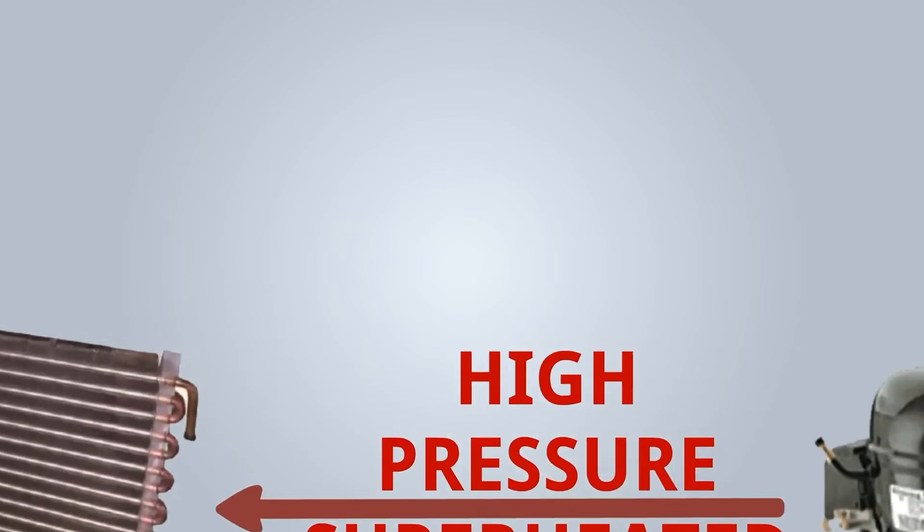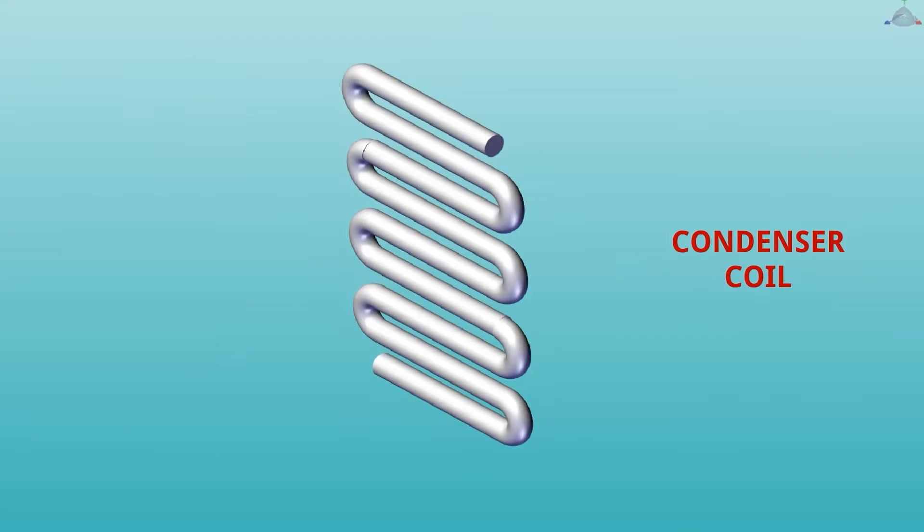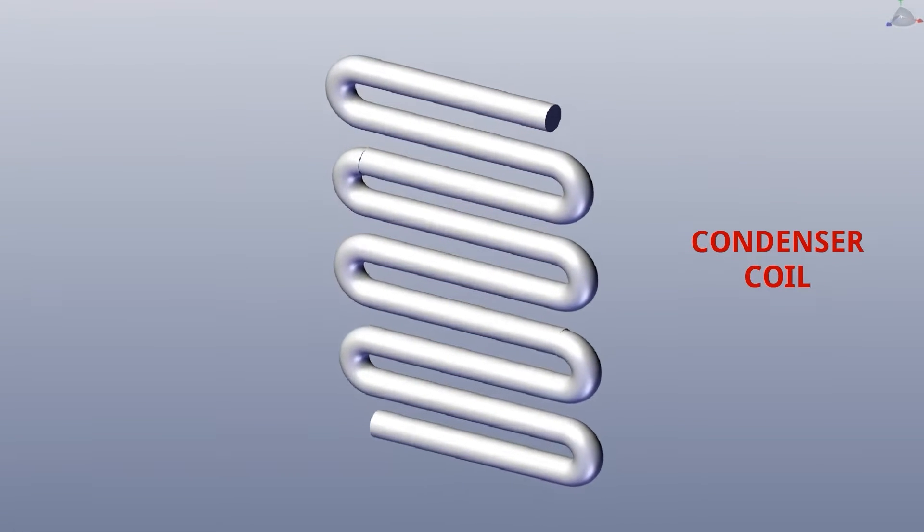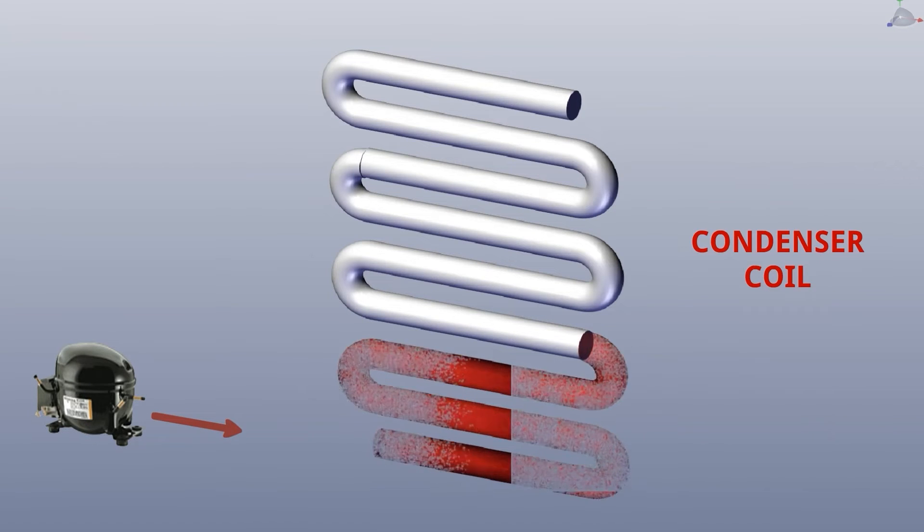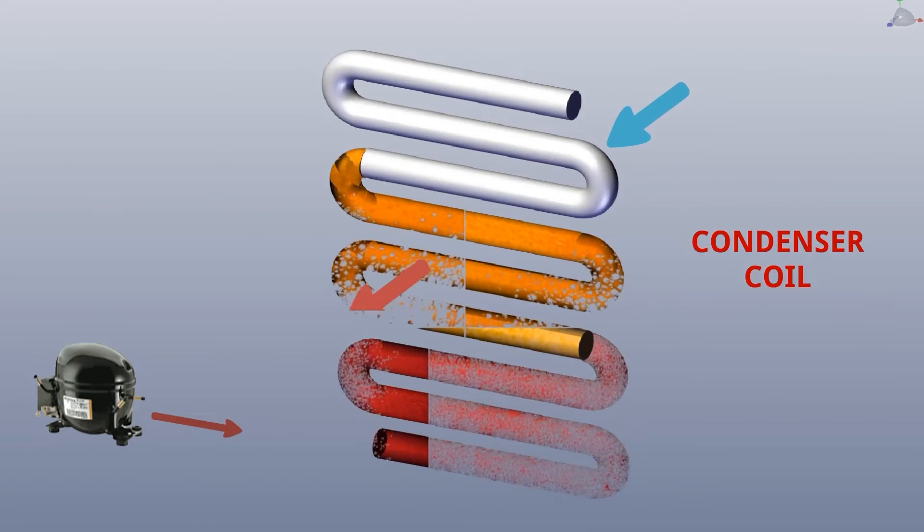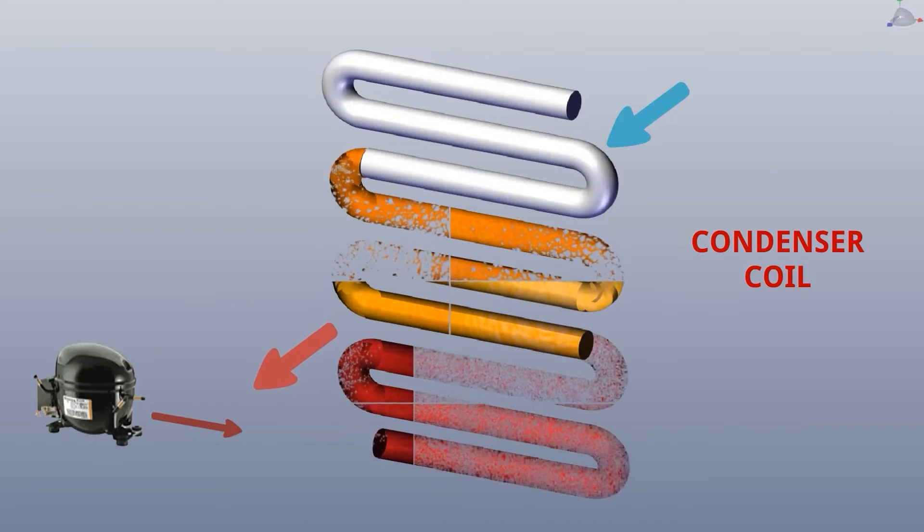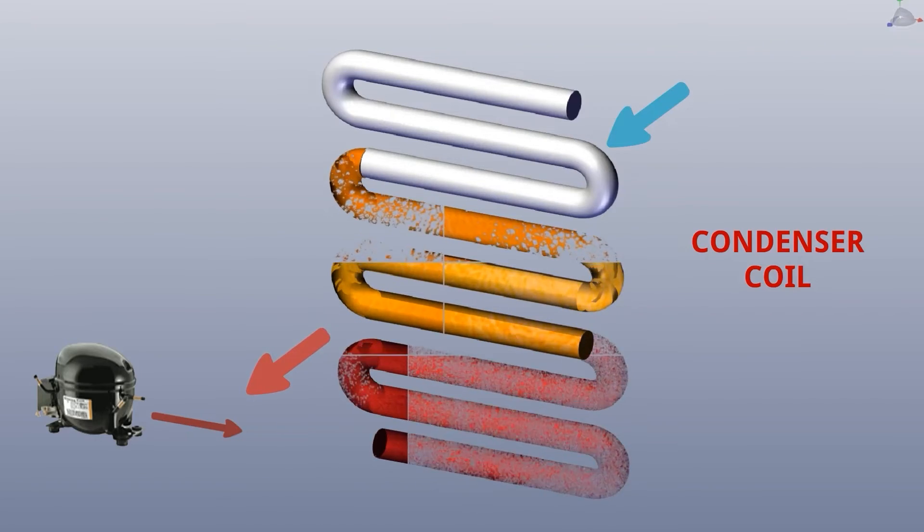This is basically a heat exchanger coil. High pressure superheated vapor enters the condenser coil, and due to the airflow through this coil, its temperature is gradually reduced.